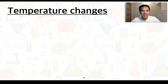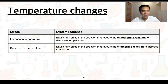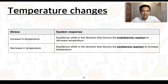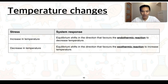We can summarise these changes in a table. If the stress is an increase in temperature, then the equilibrium will shift in the direction that favours the endothermic reaction to try and decrease the temperature — that could be either the forward or backward reaction. A decrease in temperature will cause equilibrium to shift in the direction that favours the exothermic reaction to try and increase the temperature, and again that could be the forward or backward reaction.